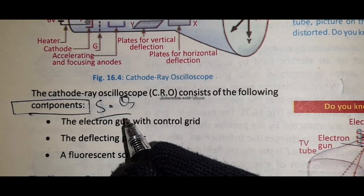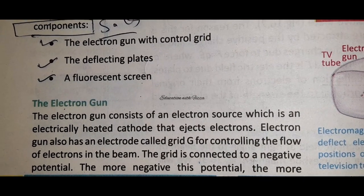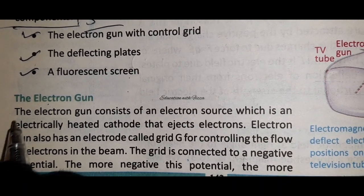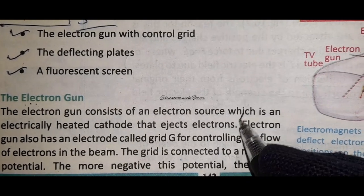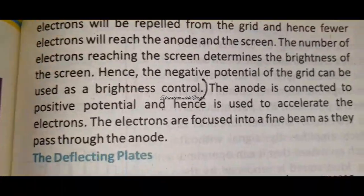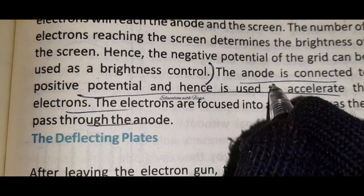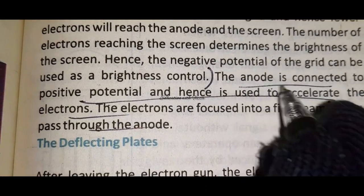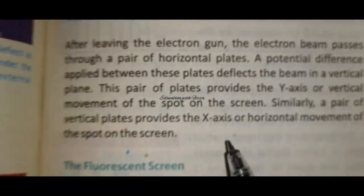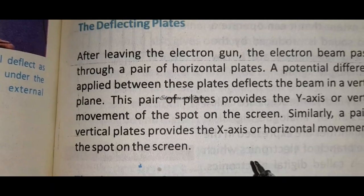What are the components of CRO? You should know the three components. After that we will see the electron gun - the electron gun can be a short question: that the brightness of the screen can be controlled. You should know the question: what is the role of the electron gun? You should know about the grid as well. This is for MCQs - what is the role of deflecting plates.